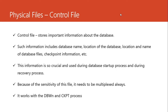We are going to begin with one of the most important files in the database called the control file. The work of the control file is to store important information about the database. We looked at this file in the previous episode, but we need to understand it — what information is stored in this file? A lot of information is stored. We have looked at the checkpoint information: when data is moved from the database buffer to the data file, that movement is called the checkpoint event. Whenever the checkpoint event happens, we need to update the control file and the data file headers about that movement.